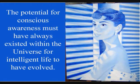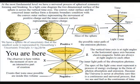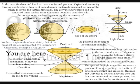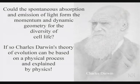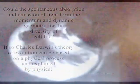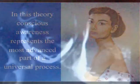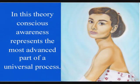The potential for conscious awareness must have always existed within the universe for intelligent life to have evolved. In this theory, this potential is formed at the most fundamental level by a process of spherical symmetry forming and breaking. Such a process will form entropy or disorganization, with a built-in potential for ever greater symmetry formation that we see in the complexity and diversity of cell life, with conscious awareness representing the most advanced part of this universal process.